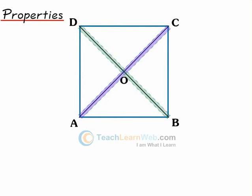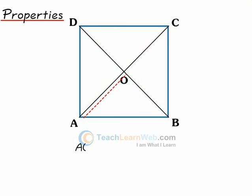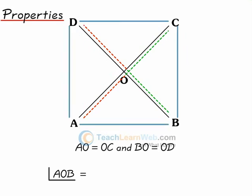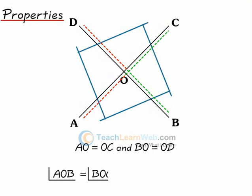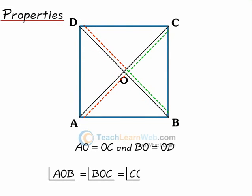Its diagonals are equal. Its diagonals bisect each other at right angles — AO = OC and BO = OD, and angle AOB = angle BOC = angle COD = angle DOA = 90°.